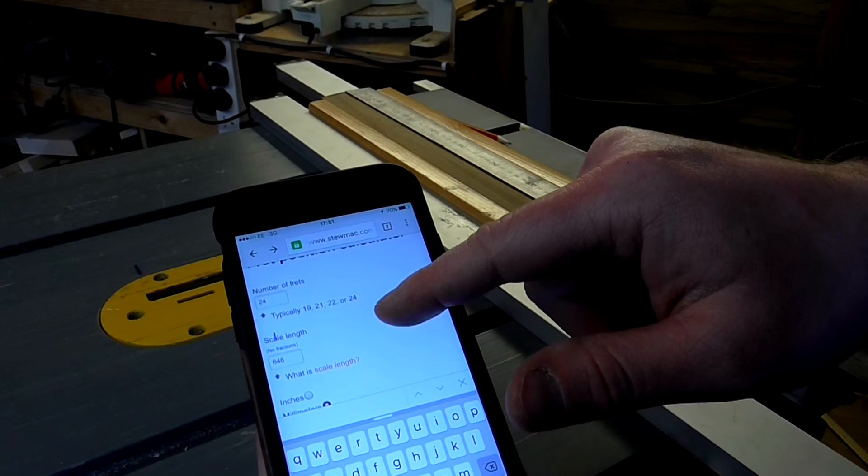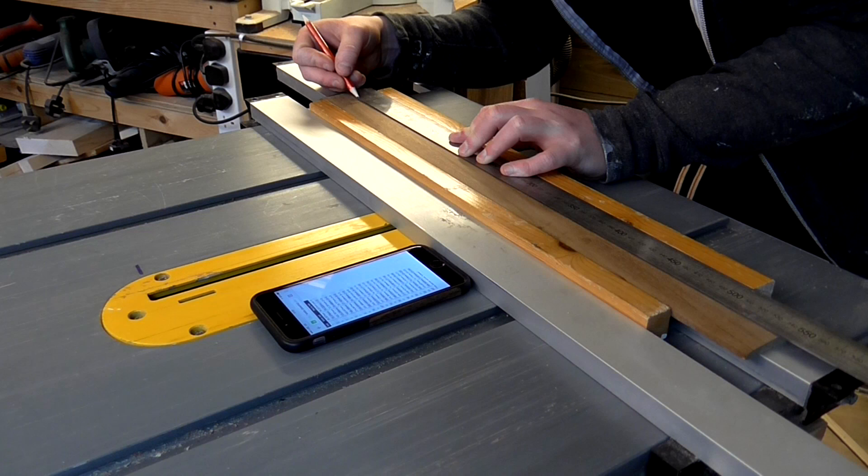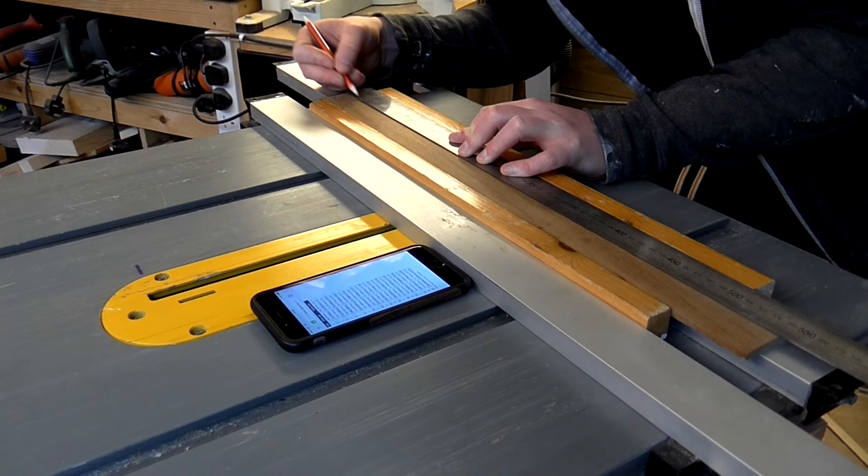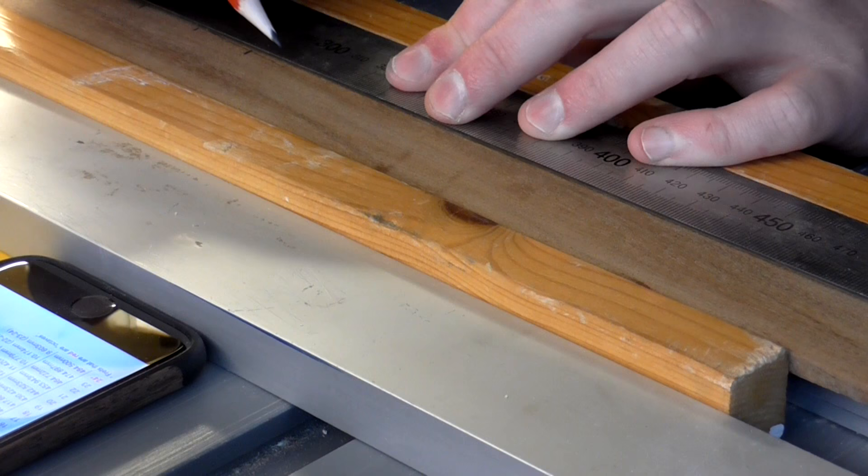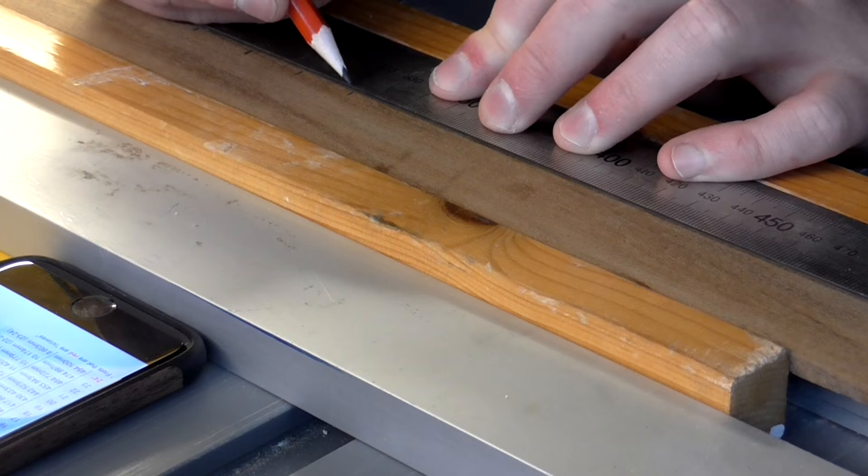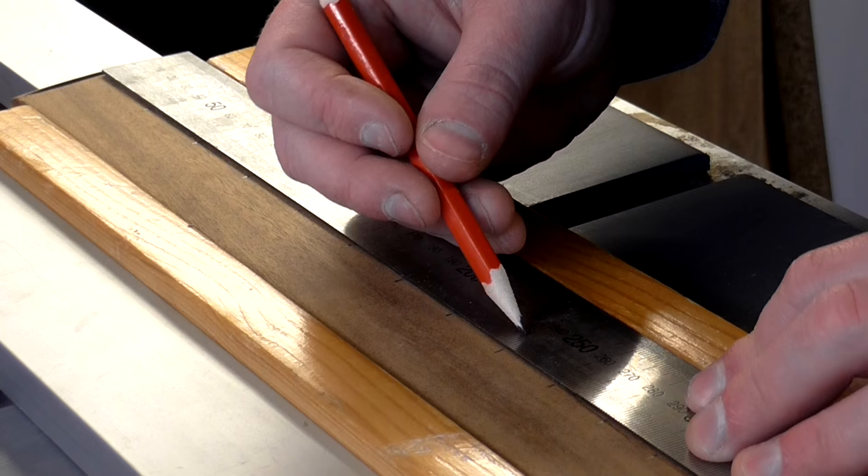I used the free Stumac fret calculator for the fret spacings. I marked these up measuring the distance from the nut slot with a steel ruler as accurately as I possibly could. I took my time and double checked the spacings once they were all marked up.